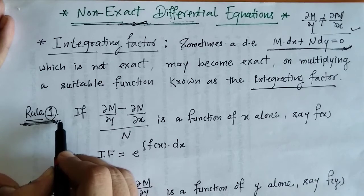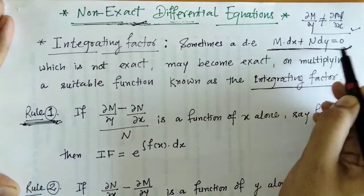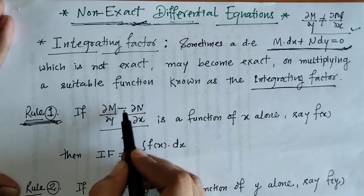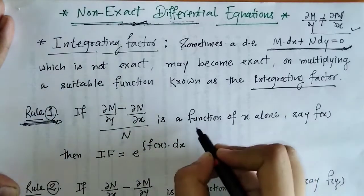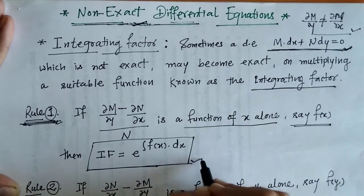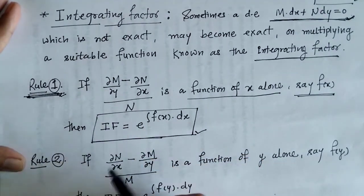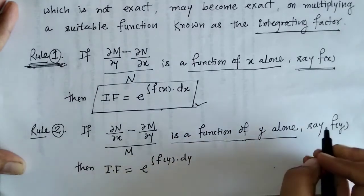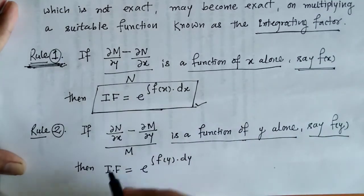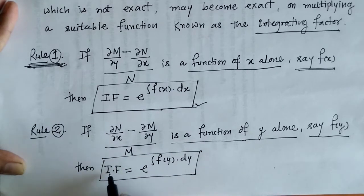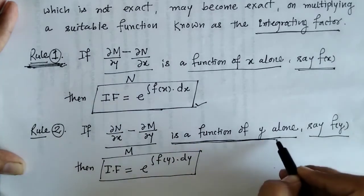Let's have a look at the first rule. When we have a differential equation of this form, we can find del M del y and del N del x. We have to find the value of (del M del y minus del N del x) divided by N, and if this value is a function of x alone, say f(x), then the integrating factor is e raised to the integration of f(x) with respect to x. Similarly, if (del N del x minus del M del y) divided by M is a function of y alone, say f(y), then the integrating factor is e raised to the integration of f(y) with respect to y.